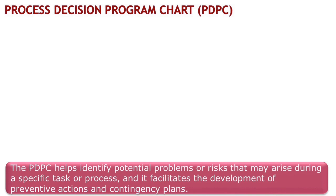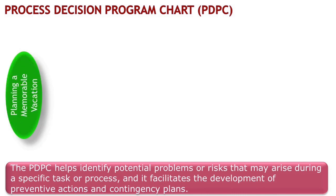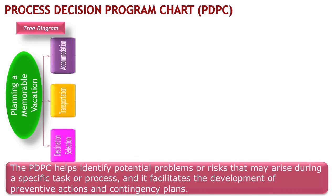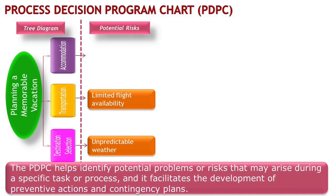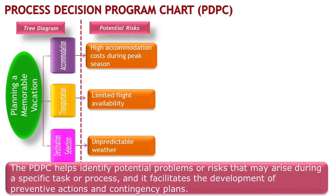The Process Decision Program Chart, or PDPC, is a valuable tool for identifying potential problems or risks in a specific task or process. It helps us develop preventive actions and contingency plans to mitigate these risks. Using our vacation planning example from the tree diagram, we apply the PDPC to identify potential risks for each category. Under destination selection, we identified the risk of unpredictable weather. Under transportation, the risk is limited flight availability. Under accommodation, the risk is high accommodation costs during peak season.